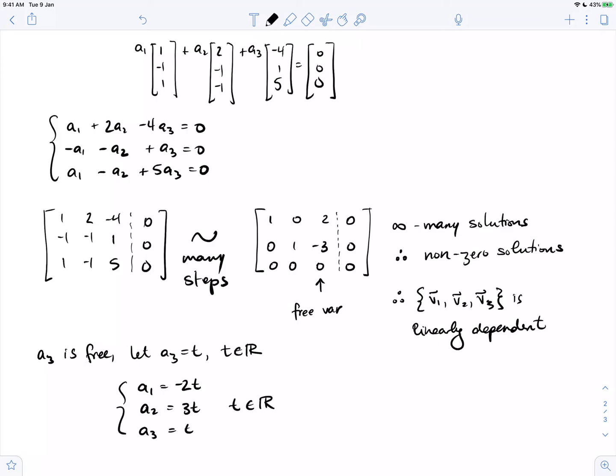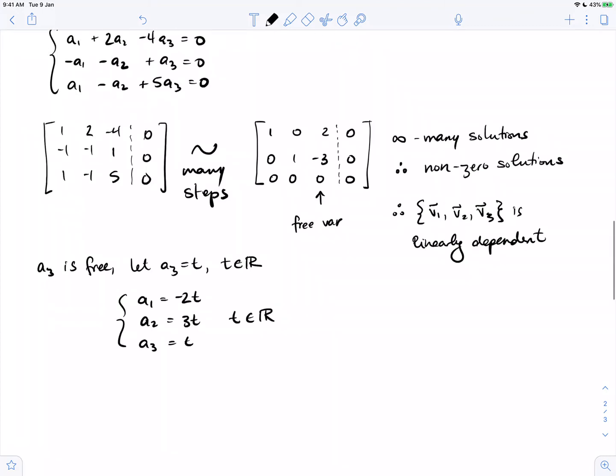There is the full solution to the linear system, which means that we can rewrite the dependence equation as a1v1, so minus 2t v1, plus a2v2, so 3t v2, plus a3v3, so t times v3 equal to 0.